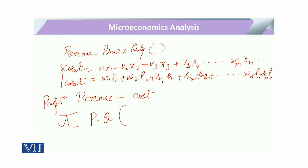Total cost equals fixed cost plus variable cost. Fixed cost does not change, so profit changes mainly through variable cost. If we stop the production process, variable cost becomes zero and output becomes zero, and in that form of cost we still have the fixed cost remaining.